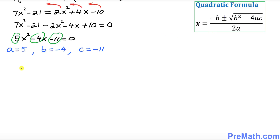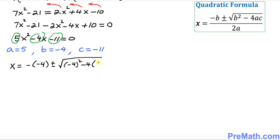We write x equals negative b — b is negative 4 — plus or minus the square root of b squared minus 4ac, where b squared is negative 4 squared, a is 5, and c is negative 11. Everything is divided by 2 times 5, which is 10.